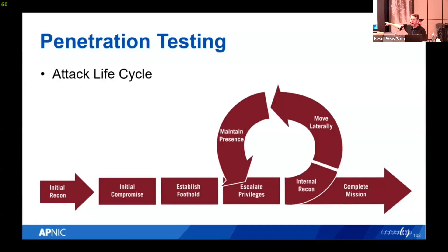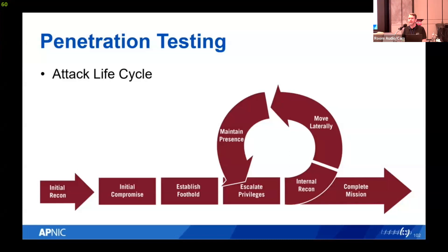They maintain that presence, escalate privileges as needed, hop from machine to machine until sometimes they have better map and control over your network than you do. At some point that cycle stops and they complete their mission — which could be having fun, infecting computers with ransomware and charging extortion money, copying data, hosting illegal files on your systems, or a combination.